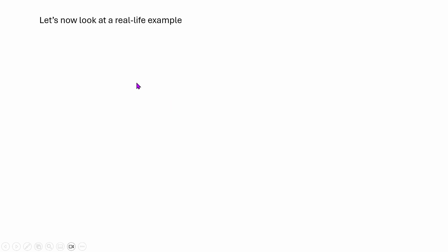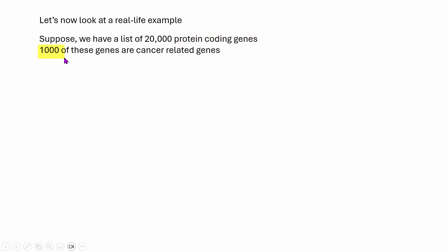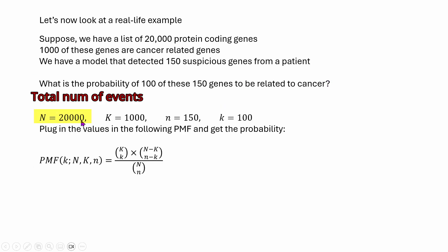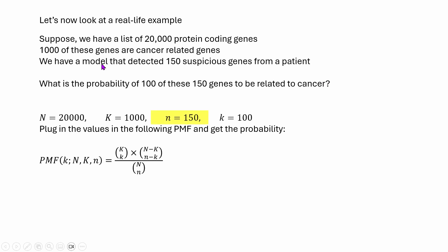Let's look at a real-life example. Suppose we have a list of 20,000 protein-coding genes. 1,000 of these genes are cancer-related. A model detects 150 suspicious genes from a patient. The question is: what is the probability that 100 of these 150 genes are cancer-related? Being cancer-related is the success event. So N = 20,000, K = 1,000, n = 150, k = 100. Plugging these into the hypergeometric PMF gives the probability. This is one real-life example of using hypergeometric distribution.